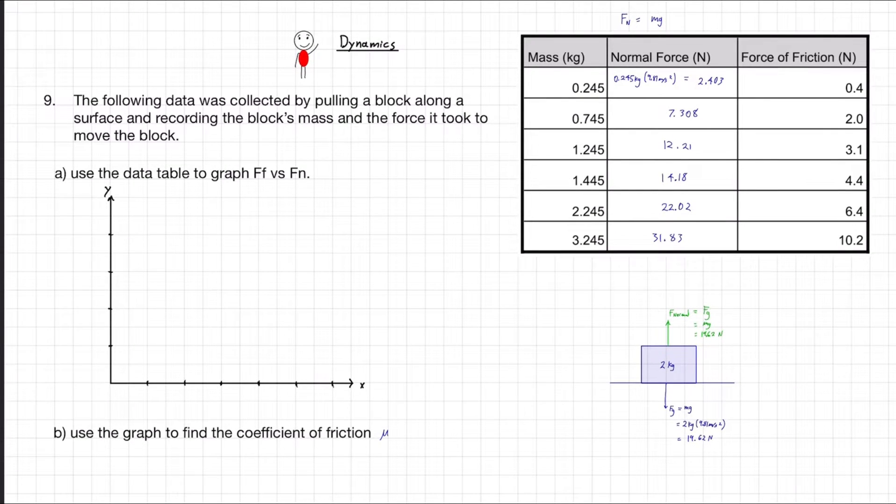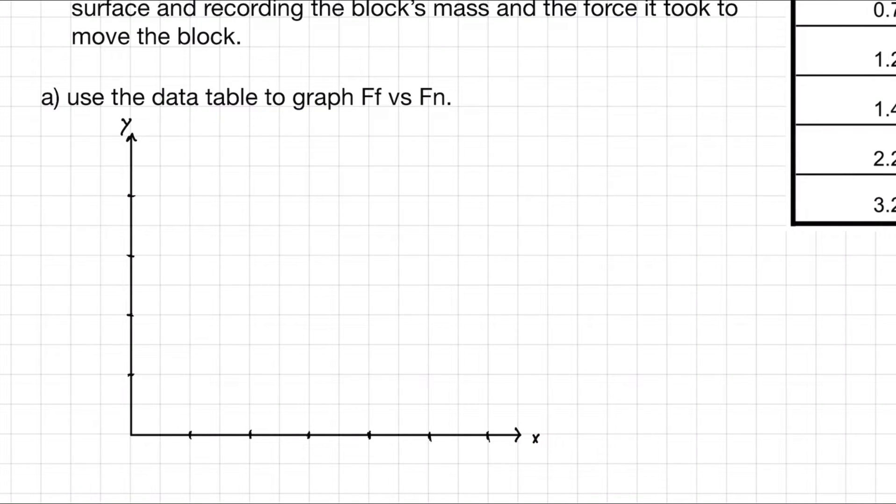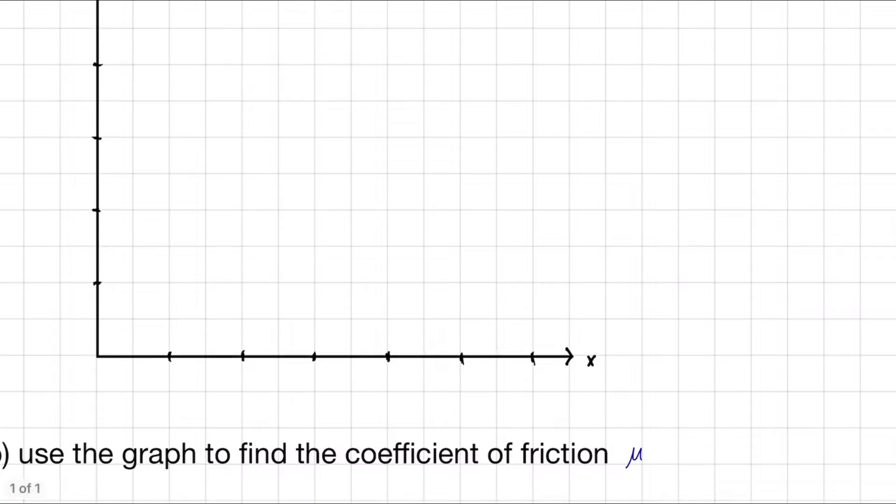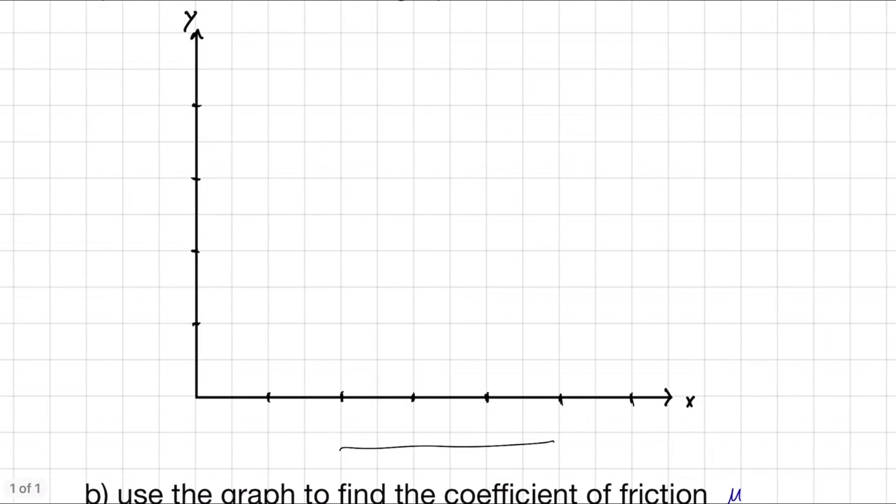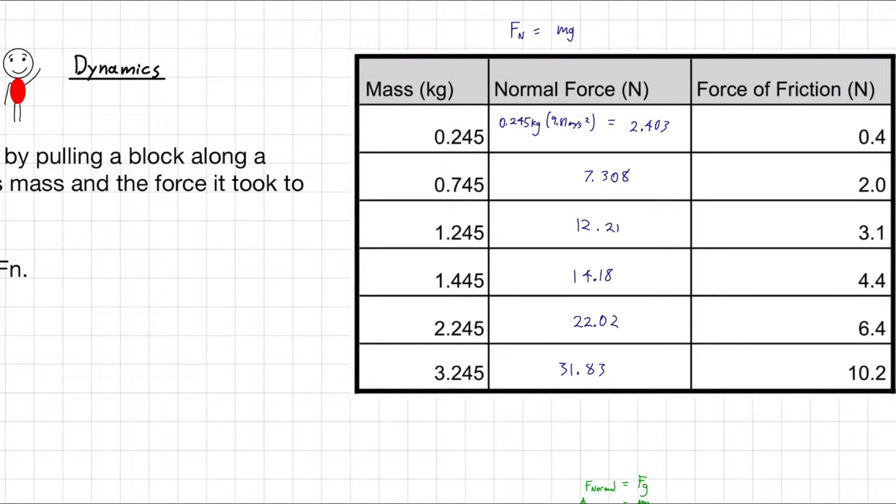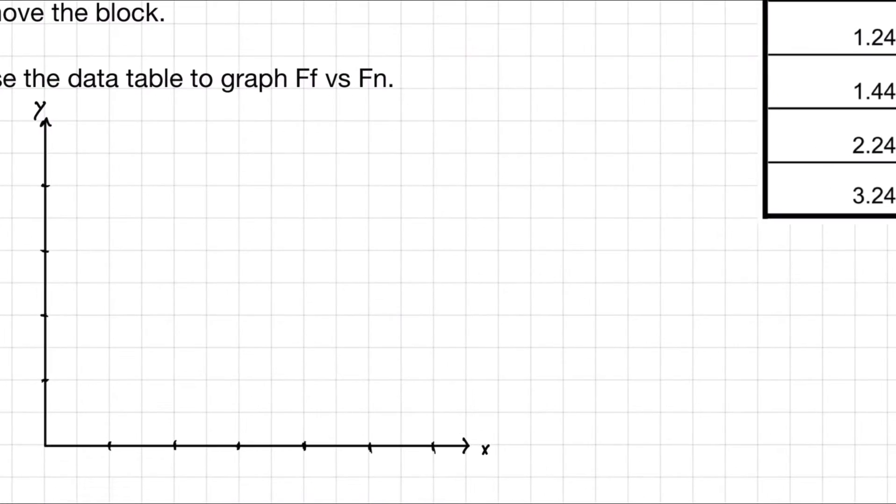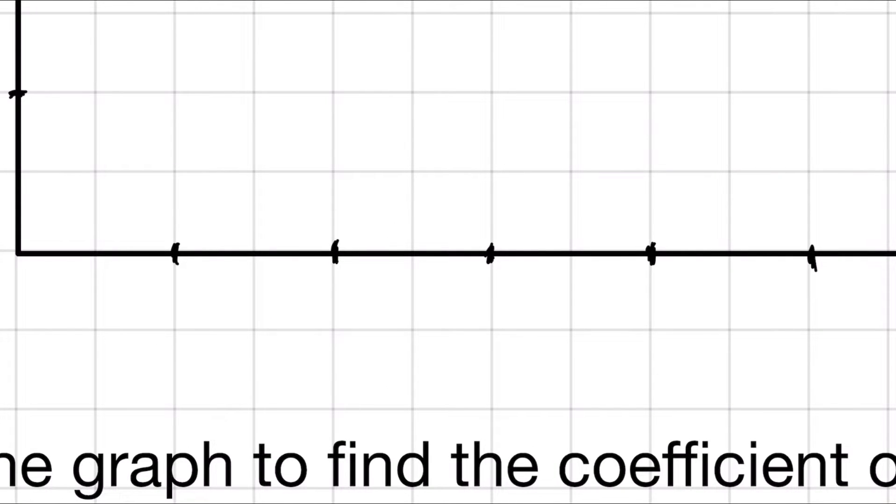We have this table filled out. Now we want to graph. Part A: use the data table to graph force of friction versus the normal force. We want our independent variable on the x-axis and our dependent variable on the y-axis. The variable that we have control over in this case is the mass of our object, and the one related to the mass is the normal force. When we're doing this experiment, the normal force is what we control. The force of friction is just a result of that. So the force of friction depends on the normal force. I'm going to label these axes.